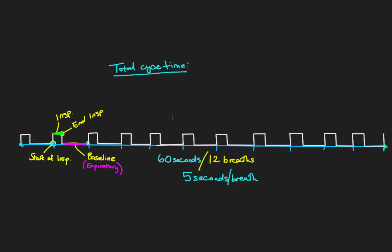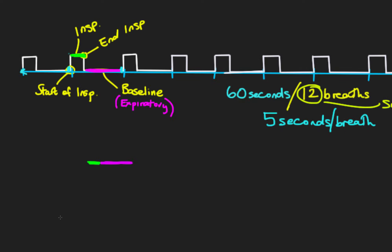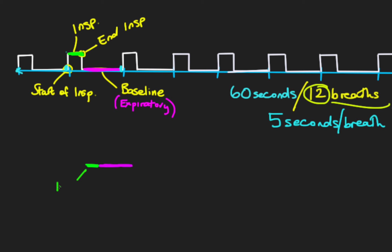By knowing how many breaths we have per minute — which we set on the ventilator in most modes — if we set a respiratory rate of 12, that means in the 60-second period we have 12 breaths. Recalling our inspiration in green and expiration in pink, we've now calculated that this total time of green plus pink is five seconds — our total cycle time.